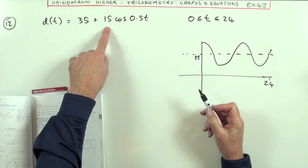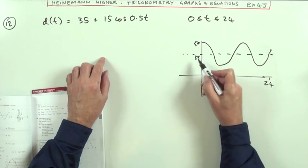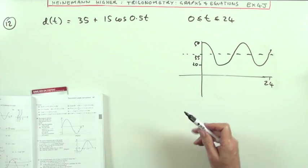If somebody said, what's the highest it ever gets to? Well, it's 15 more than that, it's going to go up to 50. What's the lowest it ever gets to? 15 off of that is 20. So what does the question say?